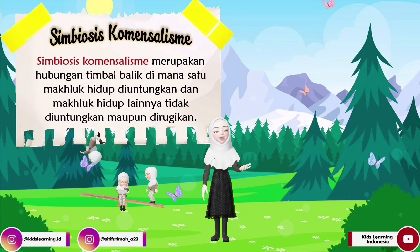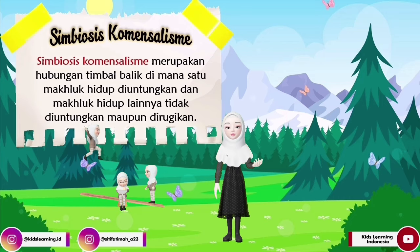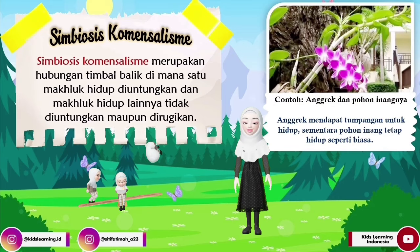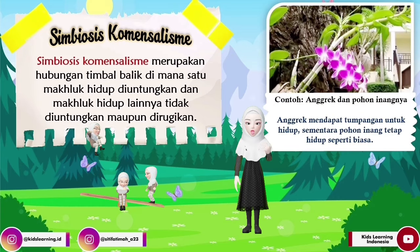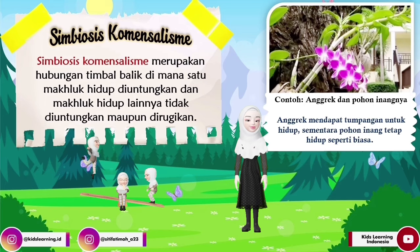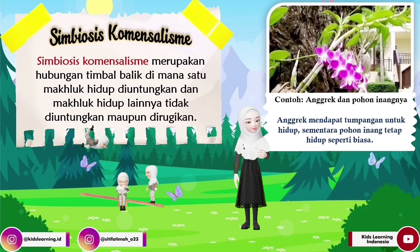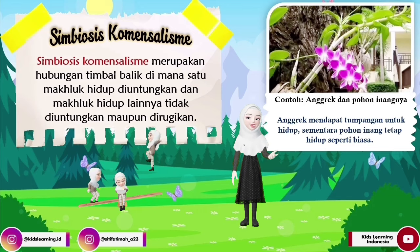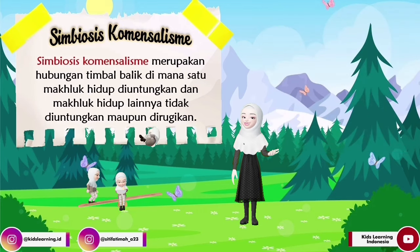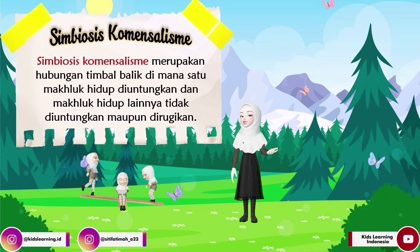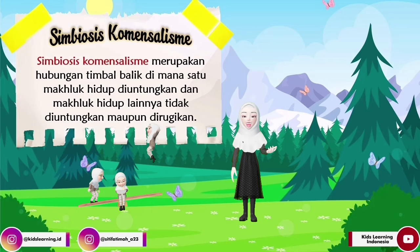Untuk contoh simbiosis komensalisme ini, yaitu ada pohon anggrek atau bunga anggrek dan pohon inangnya. Bunga anggrek ini mendapatkan tumpangan untuk hidup, sementara pohon inang tetap hidup seperti biasa. Jadi pihak yang diuntungkan yaitu bunga anggrek, sedangkan pohon inang menjadi pihak yang tidak diuntungkan dan tidak dirugikan.